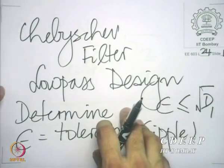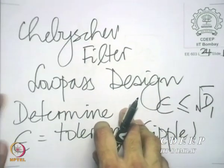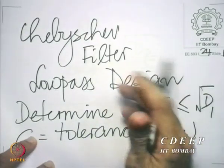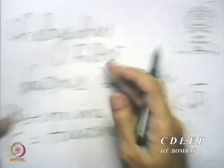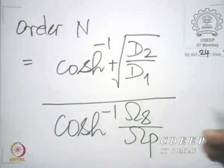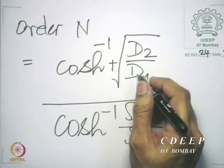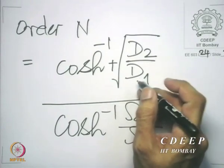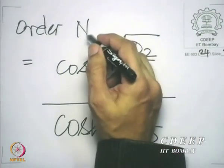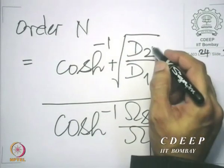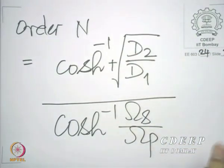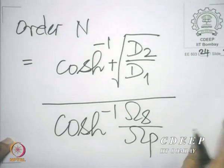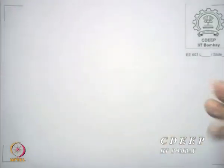We also made an observation on why we should choose epsilon equal to square root of d1. If we look at this expression, we now make some observations about the behavior of the order with respect to d2, d1, omega_s and omega_p, or rather the ratio omega_s to omega_p. Let us review a few ideas here.